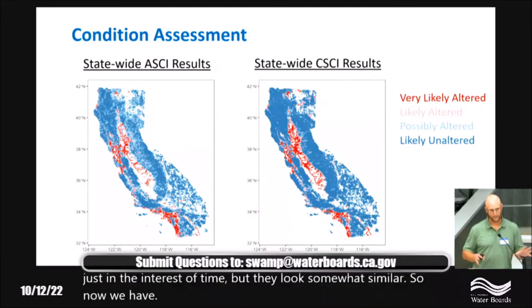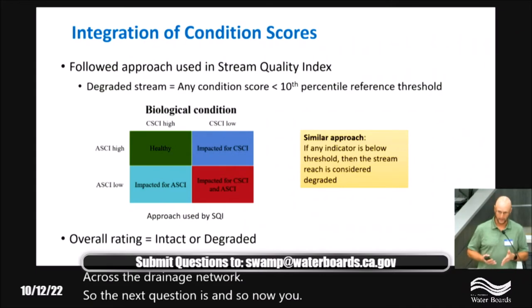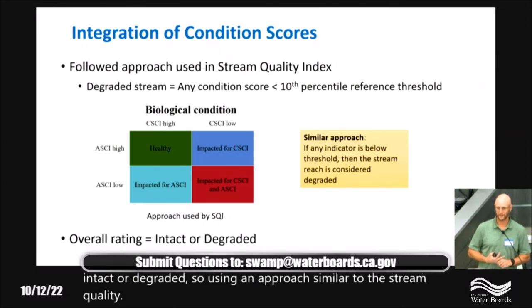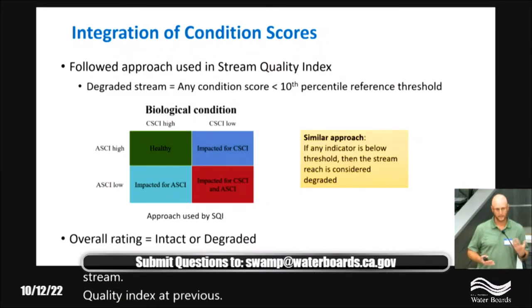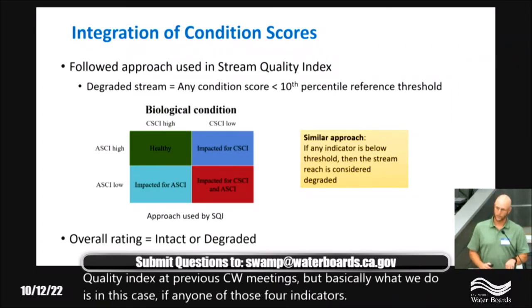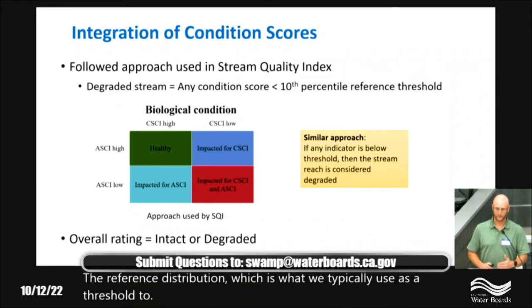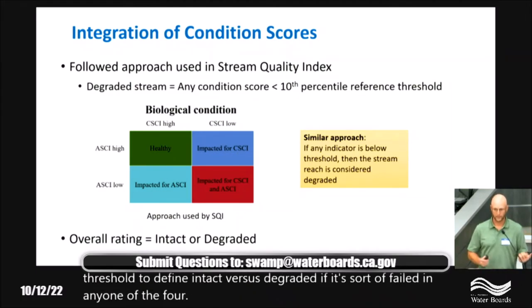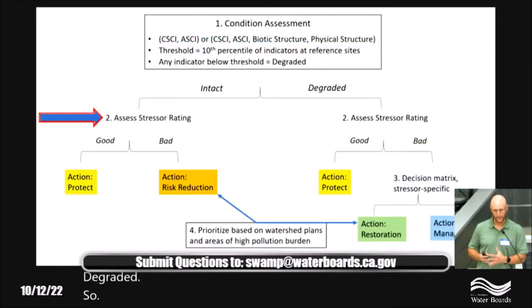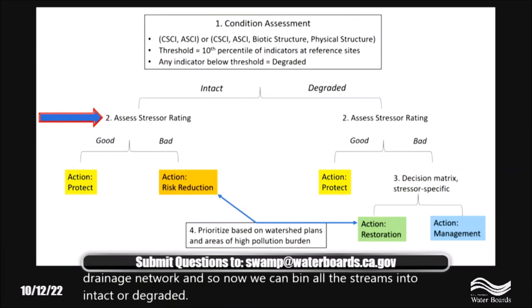With four scores per reach, we still need to bin everything into intact or degraded. We used an approach similar to the stream quality index. If any one of the four indicators had scores below the 10th percentile of the reference distribution — which is our typical threshold to define intact versus degraded — we called it degraded. So we're being conservative: if you fail any one indicator, we call it degraded. This allows us to bin all streams across the drainage network into intact or degraded based on whether they failed any of the four indicators.